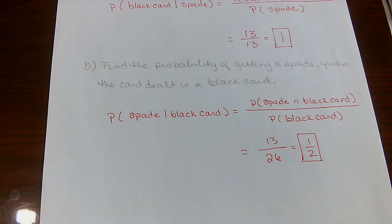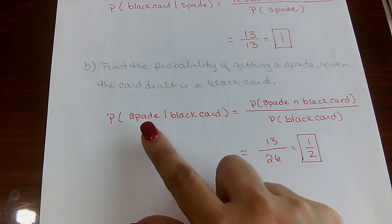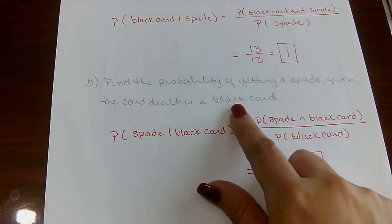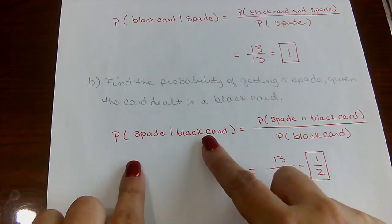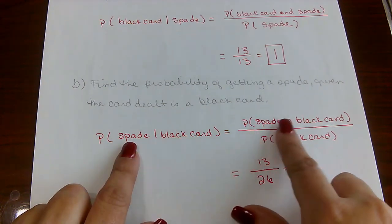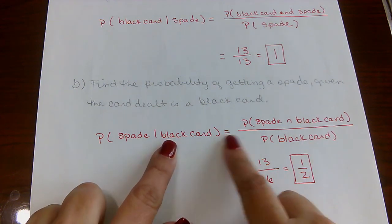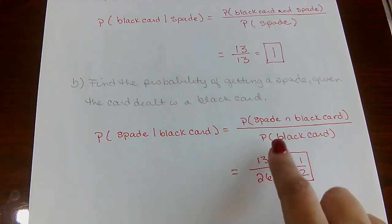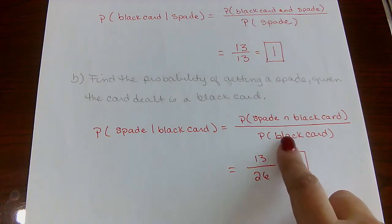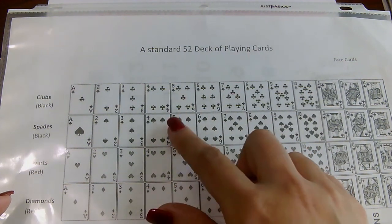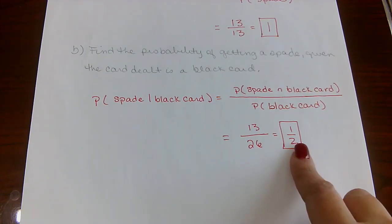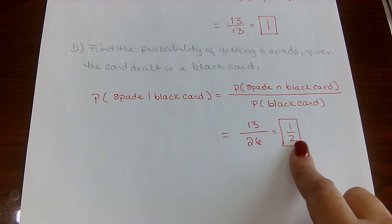Part B: find the probability of getting a spade given the card was black. Now spade is in the numerator and black card is in the denominator. P(spade and black) / P(black). There are still 13 black spades in the numerator. Black cards include spades and clubs — that's 26 cards. So 13/26 = 1/2. The probability of getting a spade if you know you have a black card is 1 out of 2.